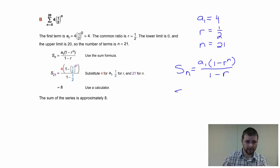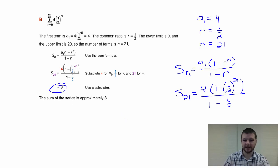Substituting in our values, we're going to have s sub 21 equals our first term, 4, times 1 minus our common ratio, 1 half, raised to the nth power, again 21, all over 1 minus 1 half. And I'm going to assume that I am quite capable of using my calculator to find a solution of approximately 8. So the sum of this series is approximately 8.